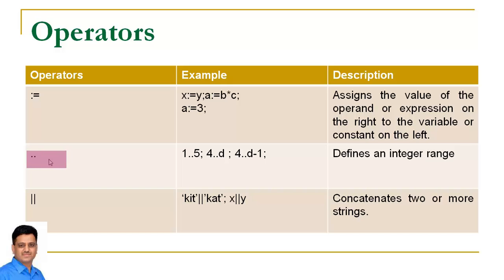We also have a range operator, which is defined with the use of two dots (..). For example, 1..5 indicates an integer range between 1 to 5. It is important to note that both lower and upper values are included in this range. We also have a concatenation operator as in SQL — in one case it will concatenate two strings 'git' and 'cat', and in another example it will concatenate the value of x with the value of y.